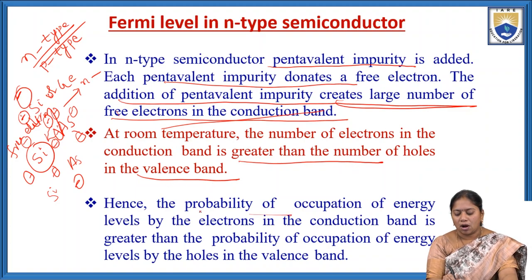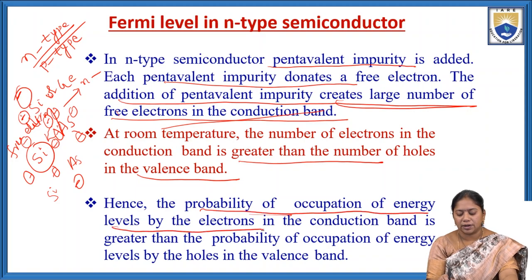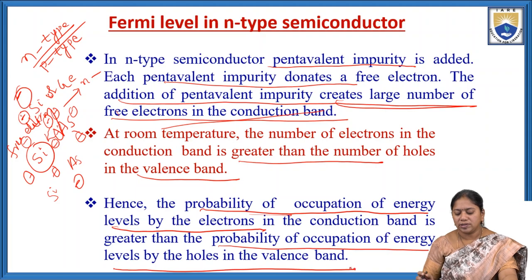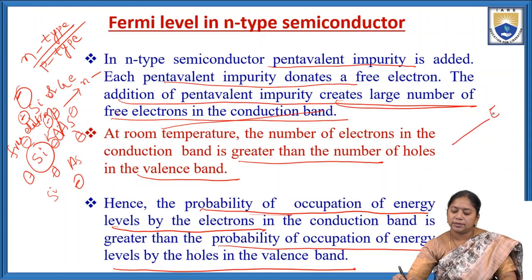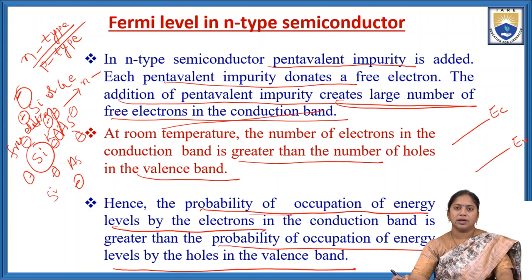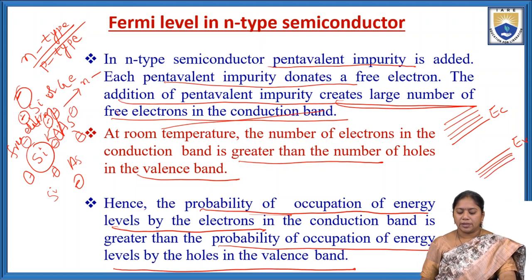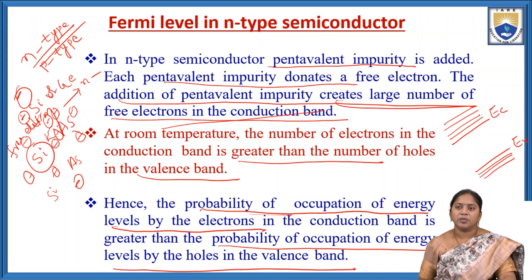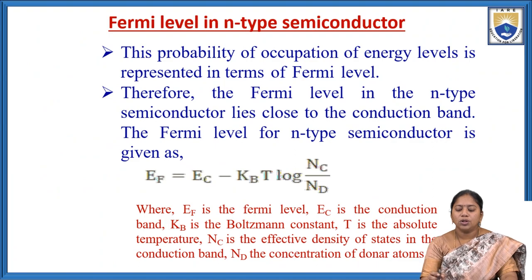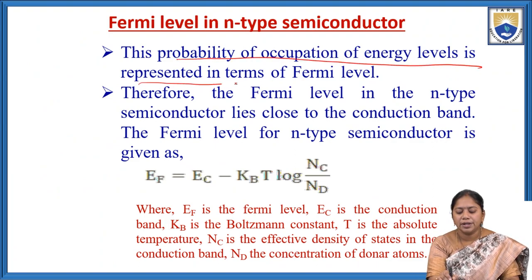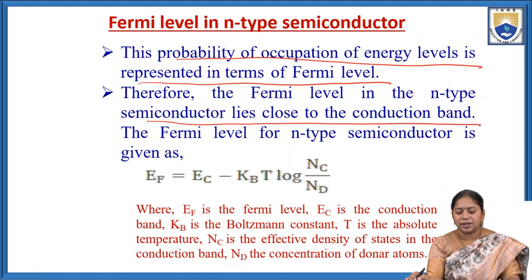The probability of occupation of energy levels by electrons in the conduction band is greater than the probability of occupation by holes in the valence band. That is why the Fermi level may lie closer to the conduction band. The probability of occupation of energy levels is represented in terms of Fermi level. Therefore, the Fermi level in the N-type semiconductor lies closest to the conduction band.